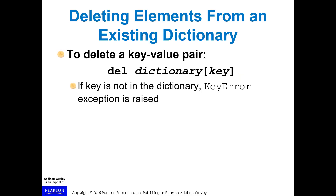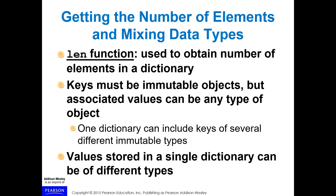To delete elements from a dictionary, use 'del' followed by the dictionary name and the key you want to delete. If the key is not in the dictionary, this will raise an exception. You can also get the number of elements using the length function. Dictionary keys must be immutable objects, but associated values can be any type of object.